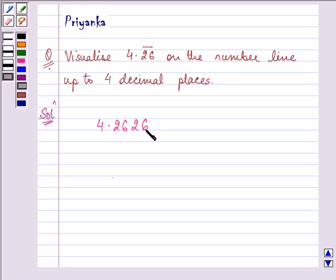Now for this question we need to first draw a number line. This number is 4 point something, so that means it will lie between 4 and 5. And since this is 4.2, that means this will lie somewhere here.